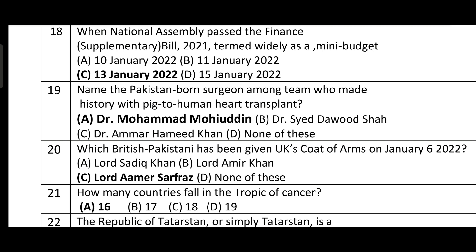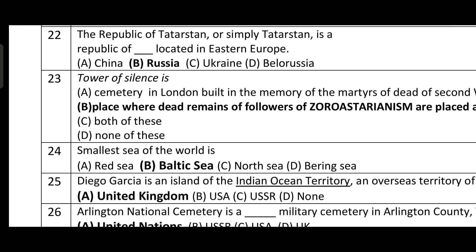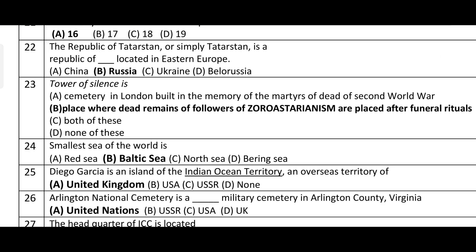Question number twenty-one: how many countries fall in the Tropic of Cancer? 16 countries. Option A is correct. Question number twenty-two: the Republic of Tatarstan is a republic located in Eastern Europe — it is a republic of Russia. Option B is correct.